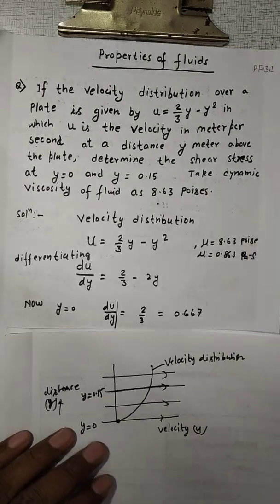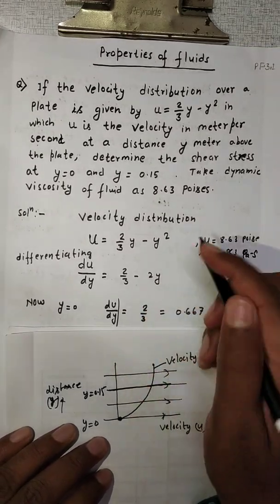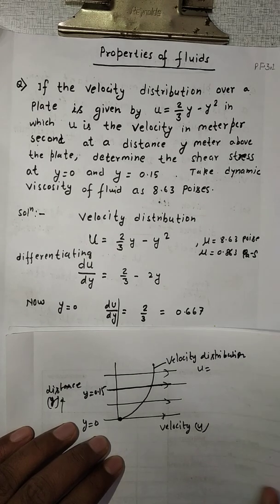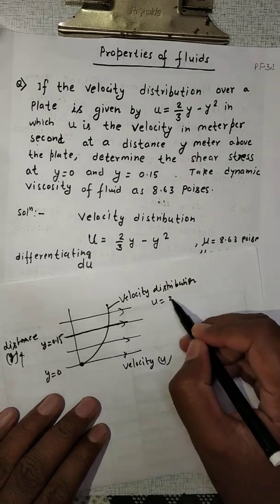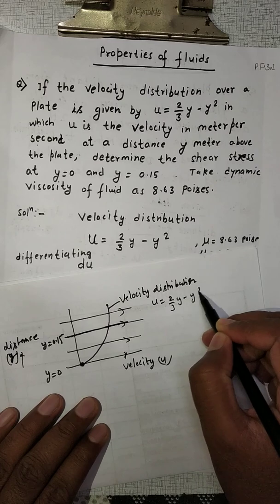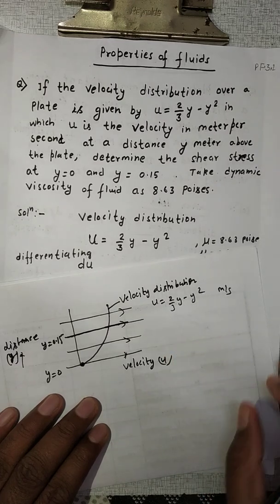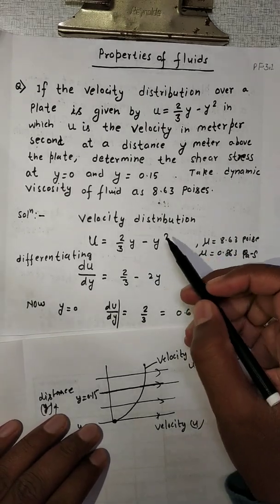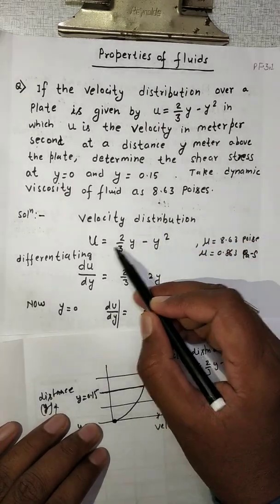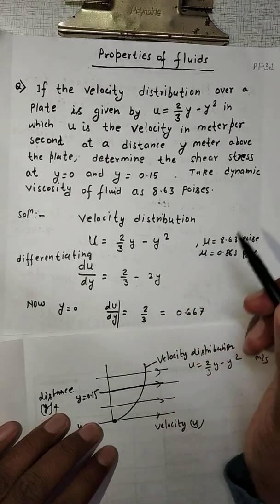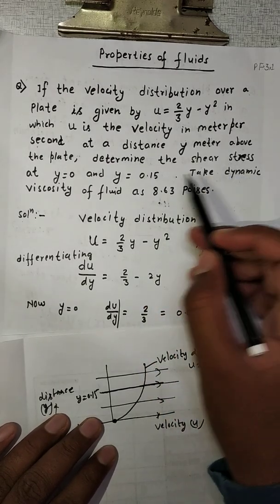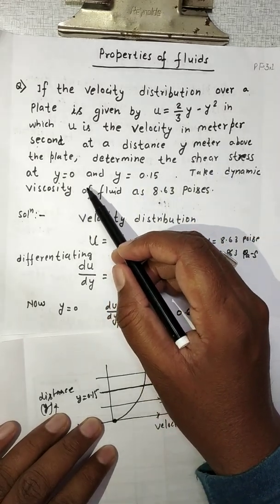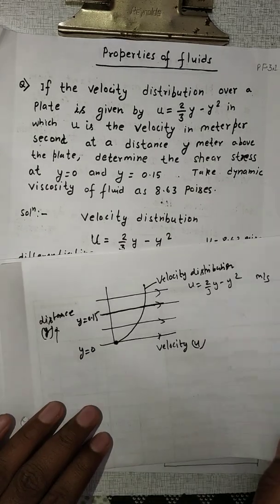Now, the given data: the velocity distribution is u = 2/3·y - y². This is the velocity distribution profile. We have to find the shear stress — determine the shear stress at y = 0 and y = 0.15.